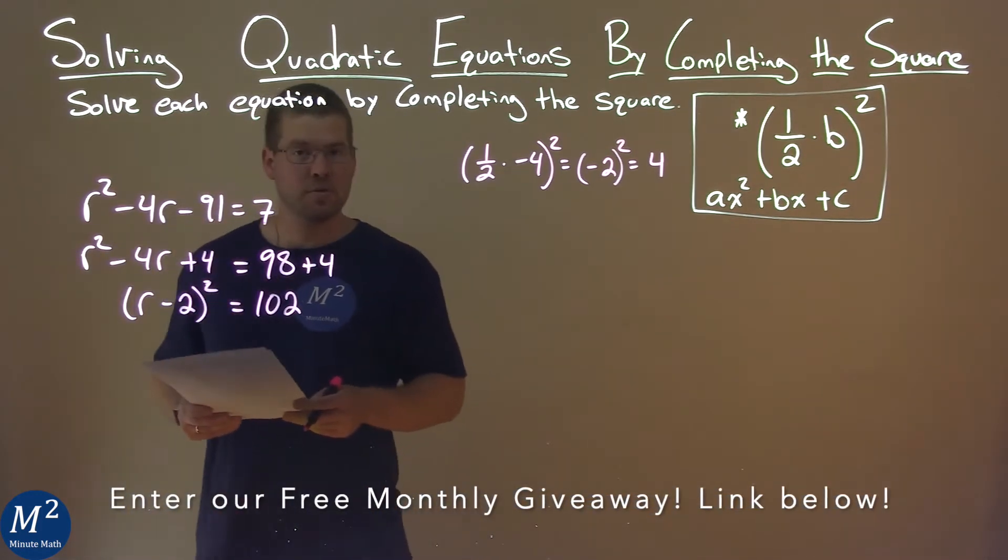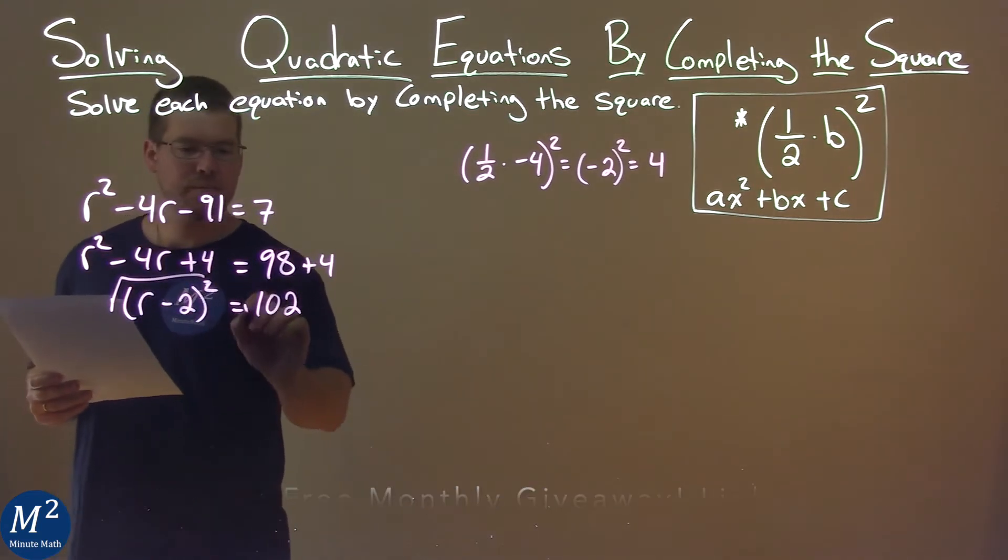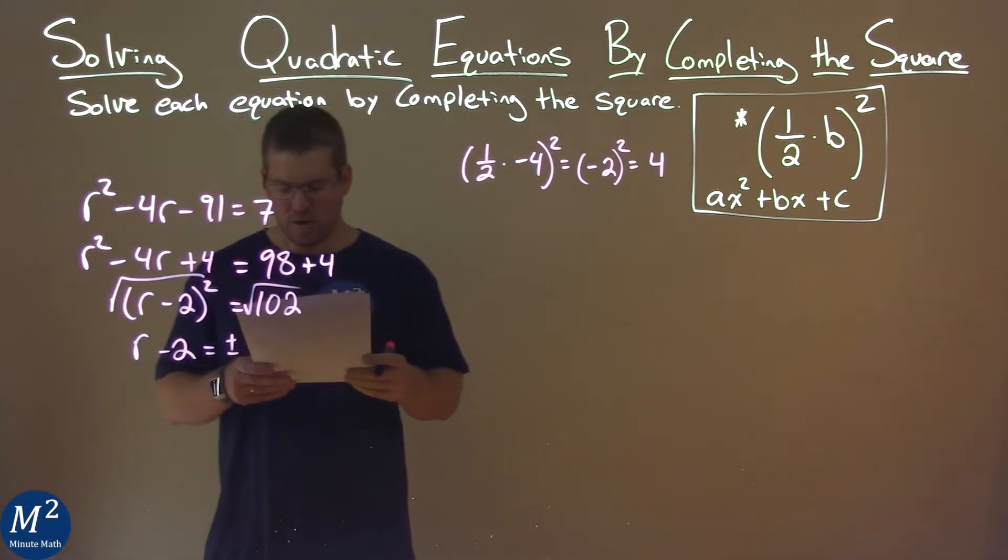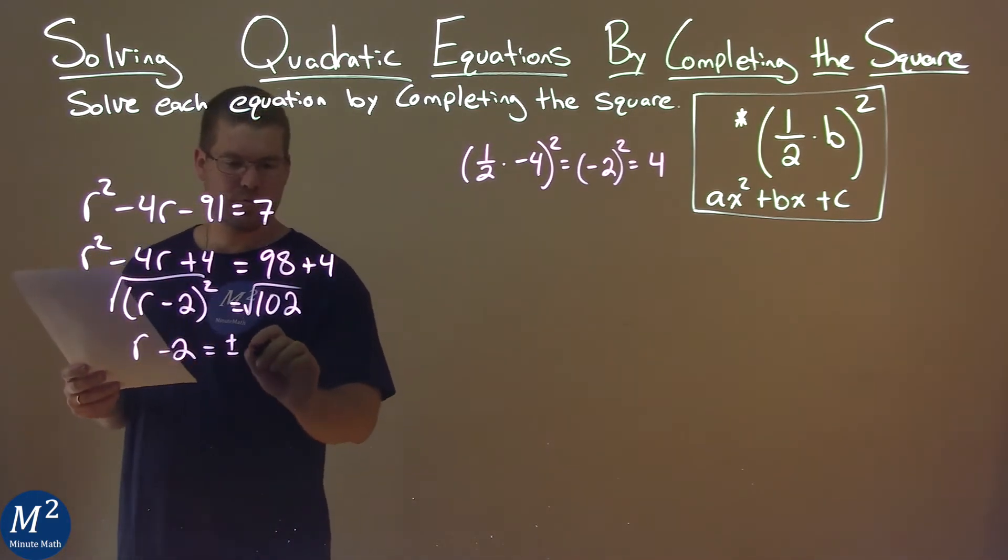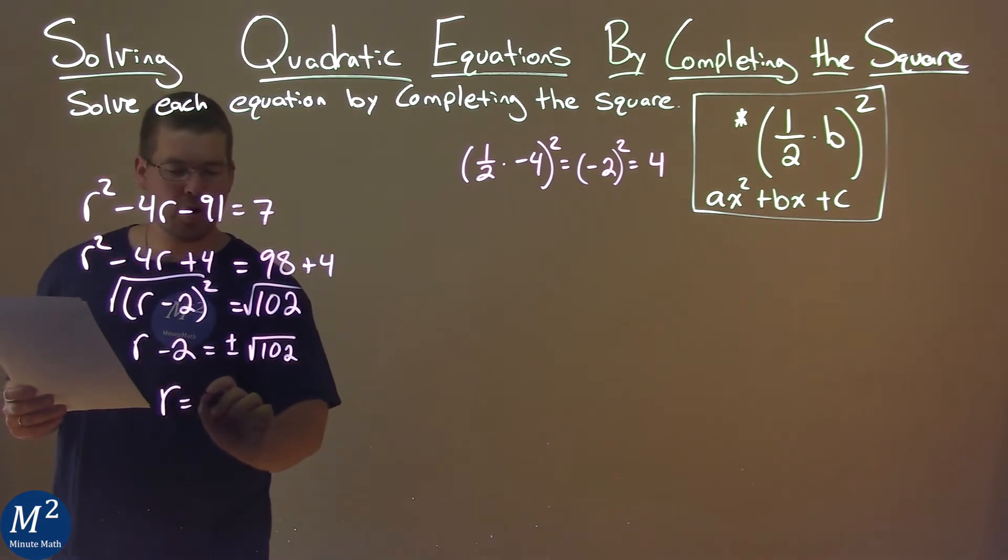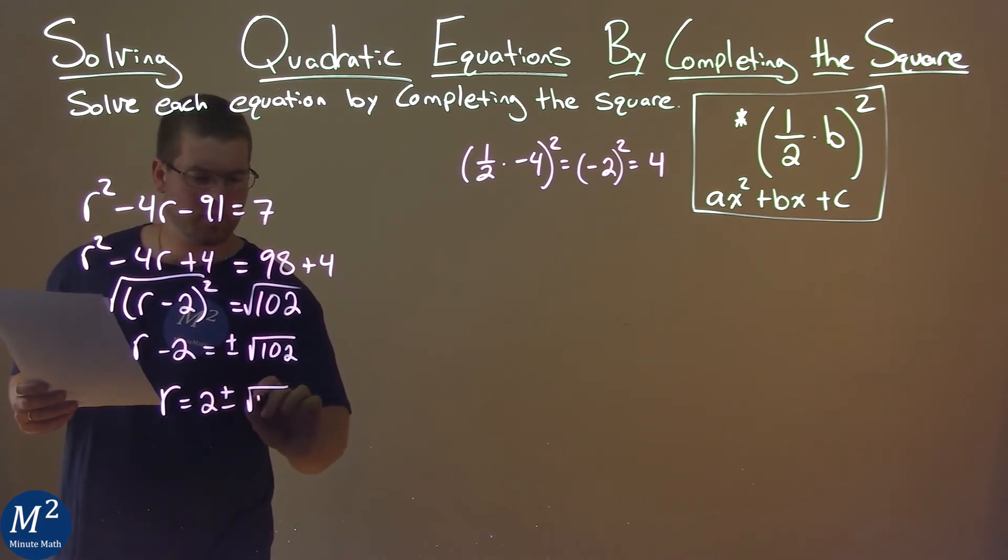So, let's go solve. Square root of both sides here, and we have R minus 2 equals plus or minus, and the square root of 102 doesn't really simplify anymore. Now, we add 2 to both sides, and we have R equals 2 plus or minus the square root of 102.